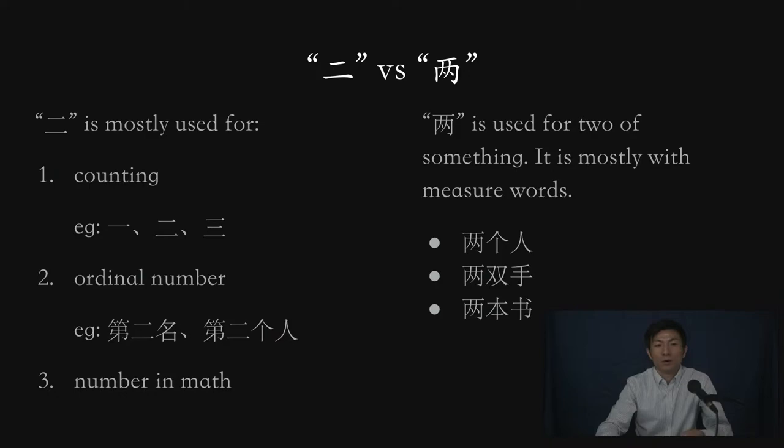Also, for ordinal numbers, first, second, and the second, we're going to use 二 instead of 两.